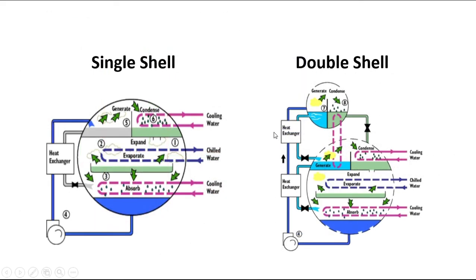There are mainly two types of lithium bromide water absorption systems: single shell type and double shell type. In the single shell type, two compartments are present in one shell — generator and condenser in one compartment, and evaporator and absorber in the other. In the double shell type, separate shells are used for absorber and evaporator, and for generator and condenser.